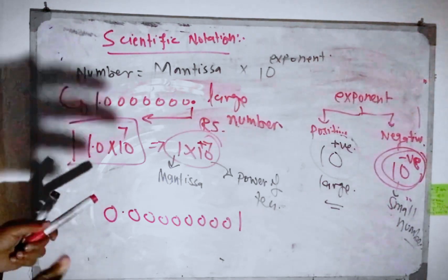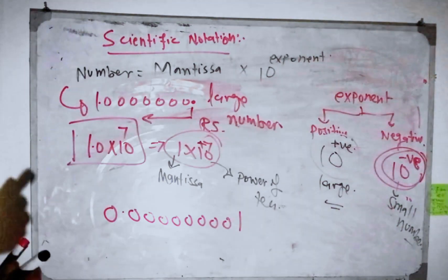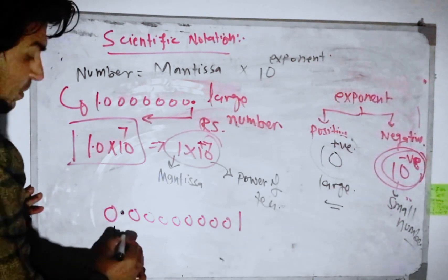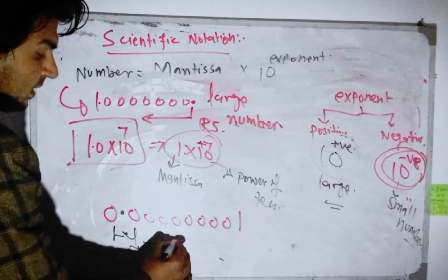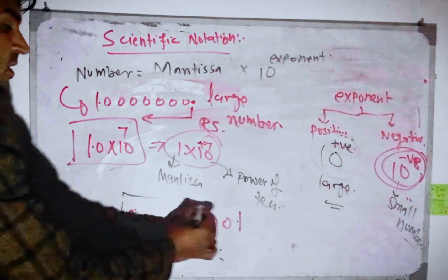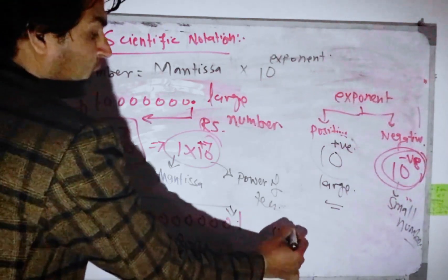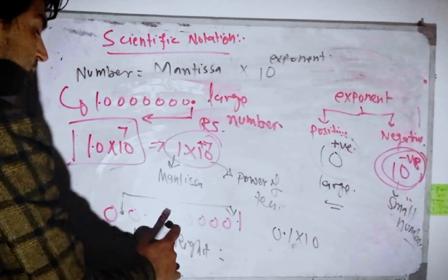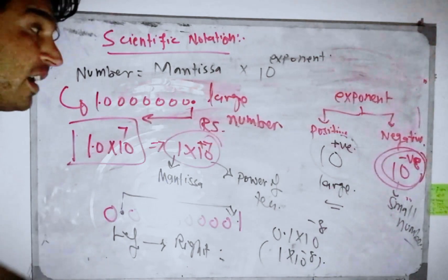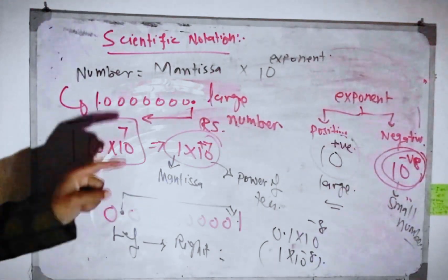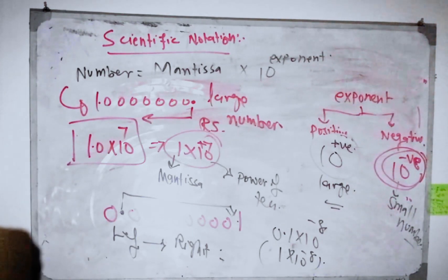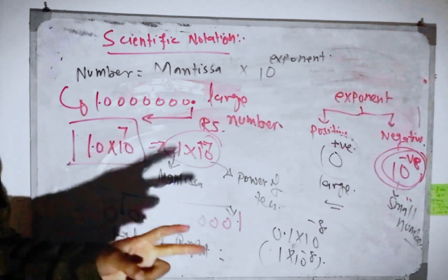In scientific notation, the simple rule: if the decimal moves to the left side, count the zeros. For example, zero point one multiplied by 10 power — counting 1, 2, 3, 4, 5, 6, 7, 8 — gives minus 8. So we can say if we have power positive and if we have power negative, there are two rules.